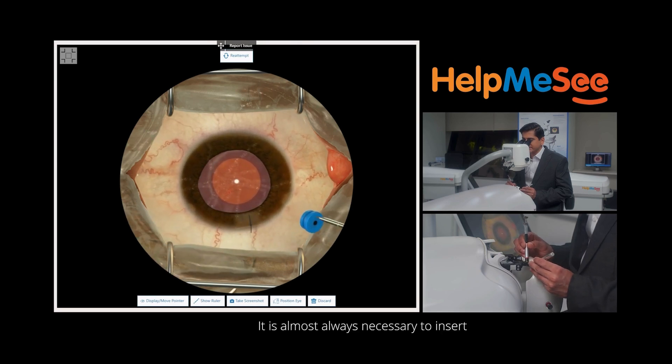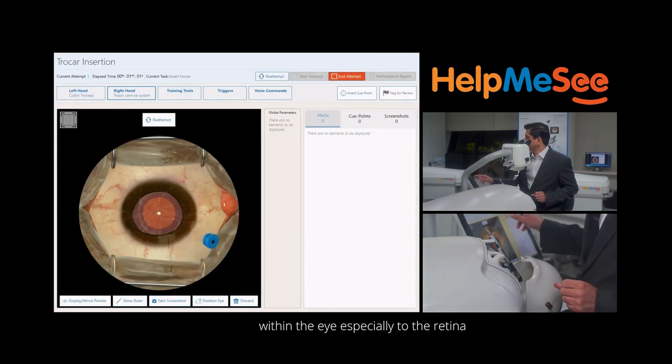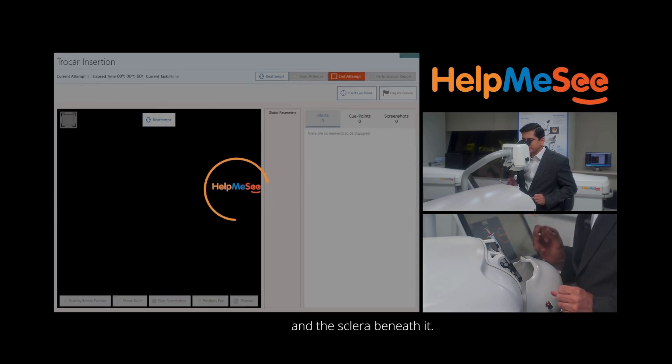It is almost always necessary to insert the trocar rightly through the correct angle, otherwise if it is not at the correct angle it will cause damage to the structures within the eye, especially to the retina and the sclera beneath it.